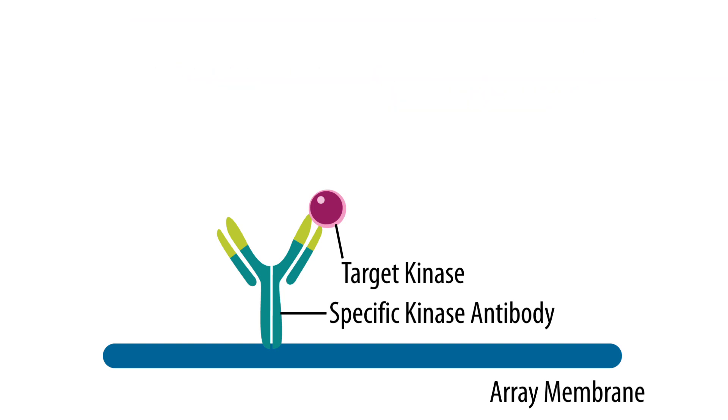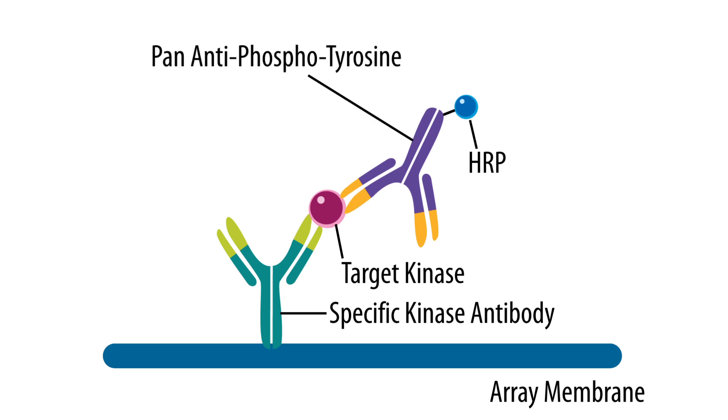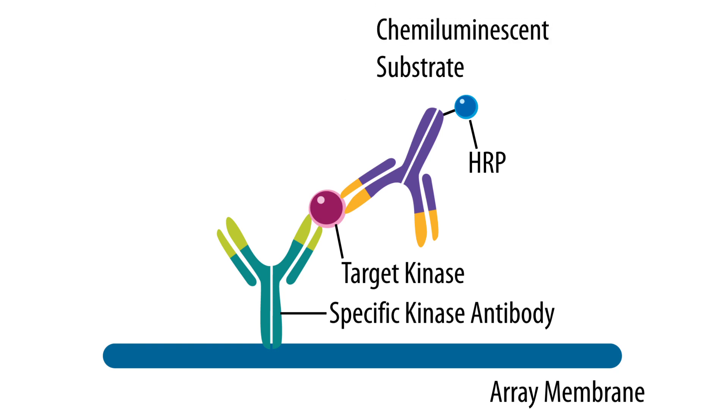Phosphorylated kinases are then detected using a horseradish peroxidase conjugated pan-antiphosphotyrosine antibody. Next, the array is incubated with chemiluminescence reagents that produce a signal proportional to the relative phosphorylation level of each RTK.